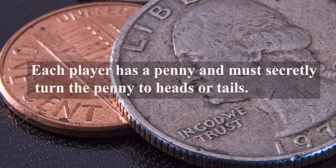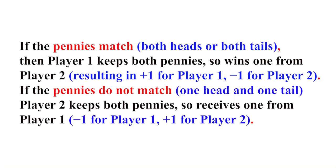A very interesting example in game theory is the game of matching pennies played between two players, player 1 and player 2. Each player has a penny and must secretly turn the penny to heads or tails. The players then reveal their choices simultaneously. If the pennies match, both heads or tails, then player 1 keeps both pennies, wins 1 from player 2, resulting in +1 for player 1 and -1 for player 2. If the pennies do not match, one head and one tail, player 2 keeps both pennies, so receives 1 from player 1, that is -1 for player 1 and +1 for player 2.